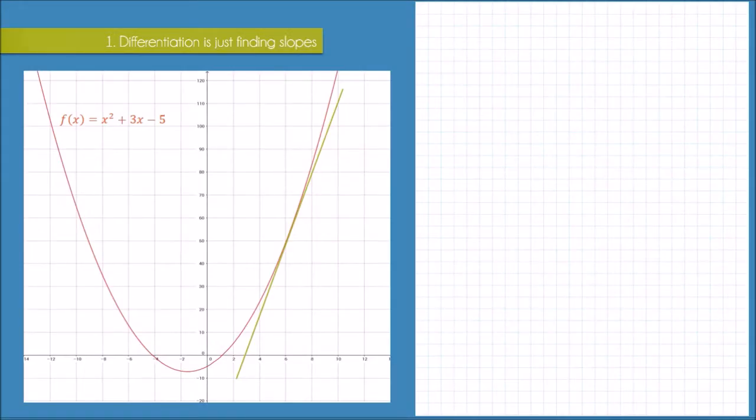Rather than jumping straight into the rules of differential calculus, I just want to build an understanding of what we're actually doing when we differentiate a function. Remember, our goal here is to find the derivative of this quadratic function at the point where x equals 6.